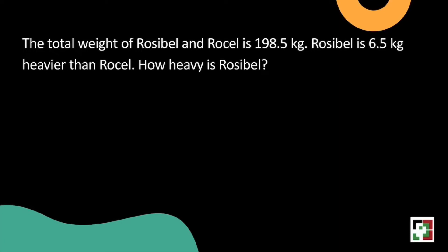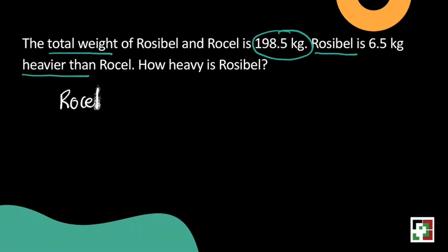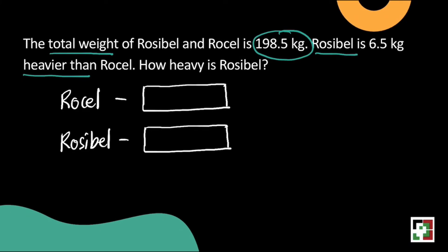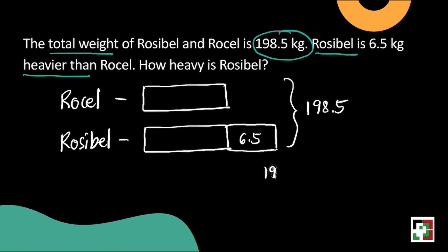Our given here is the total weight of Rosseville and Rossell, which is 198 and 5 tenths kilograms. Rosseville is 6 and 5 tenths kilograms heavier than Rossell. It is better to show that in our model because it's easier to understand that Rosseville is really heavier by 6 and 5 tenths kilograms compared to Rossell. We have to find the value of the empty boxes by subtracting 6 and 5 tenths from the total weight of 198 and 5 tenths. We get 192.